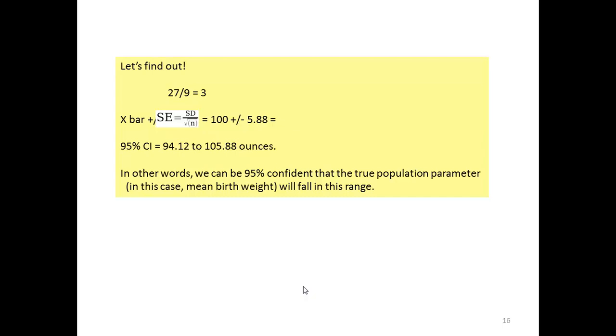It's very simple. The mean plus or minus the standard error, we say 27 divided by 9 is 3. So if we want a 95% confidence interval, it's 94 to 105. In other words, we can be 95% confident that this is the true population parameter. In this case, mean birth weight will fall in this range. We said our average or mean birth rate was 100 ounces. And so we're 95% confident that our mean would fall anywhere in this range.